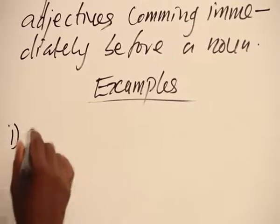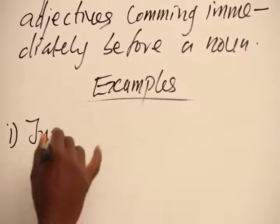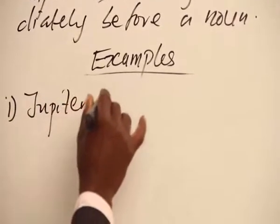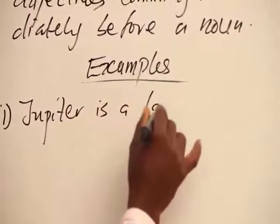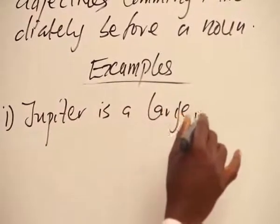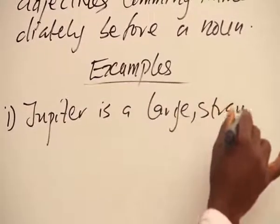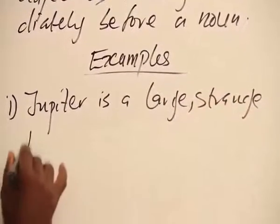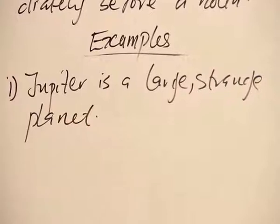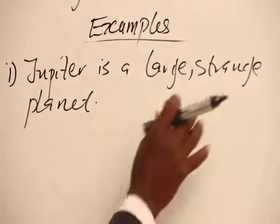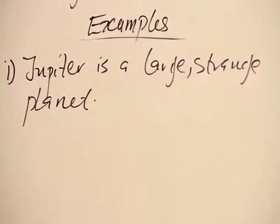Example 1. Jupiter is a large, strange planet. Now, what you have here are two adjectives coming before the noun planet.